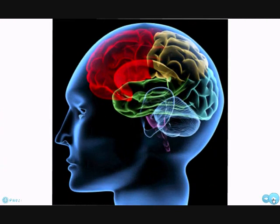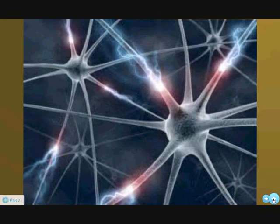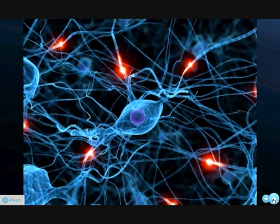But computers come nowhere closer to the complexity of our brain. That's because inside of our brain, we have these tiny little cells called neurons. There are millions of them, all interconnected. And we call these connections of neurons the biological neural network.